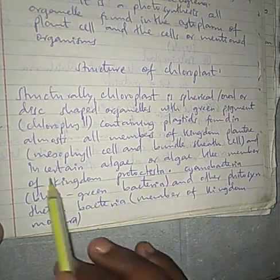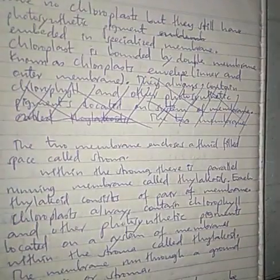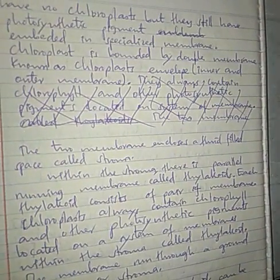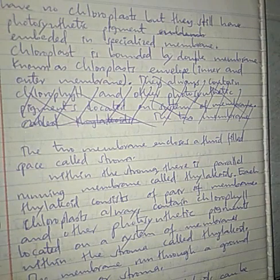Chloroplasts are also found in mesophyll cells and in certain algae or algae-like members of kingdom Protista. Cyanobacteria (blue-green bacteria) and other photosynthetic bacteria, members of kingdom Monera, also contain chlorophyll. The major function of chlorophyll is its use in photosynthesis.